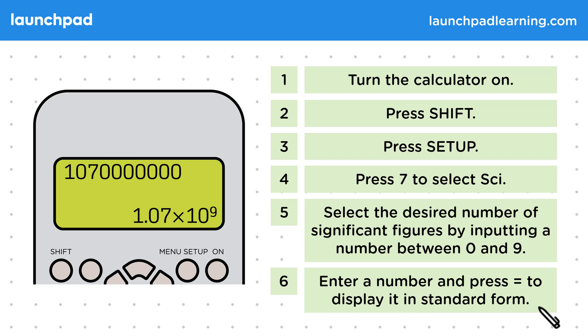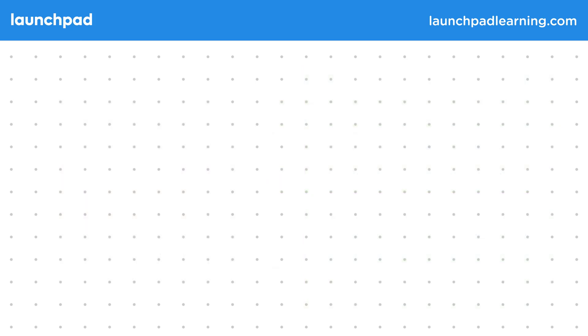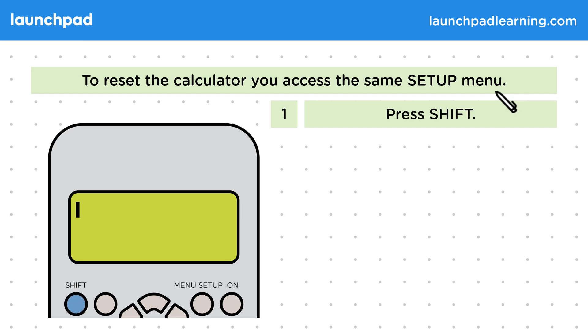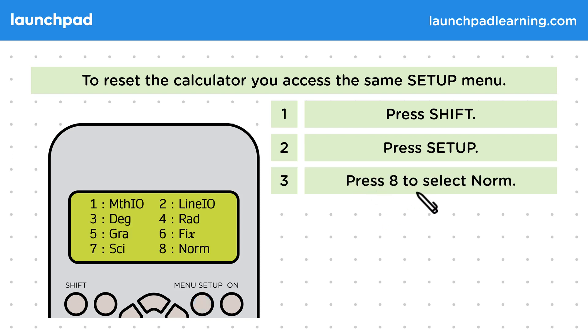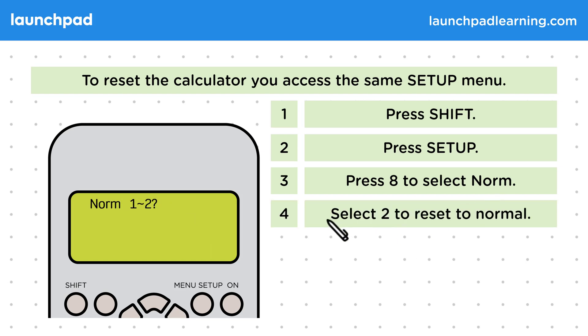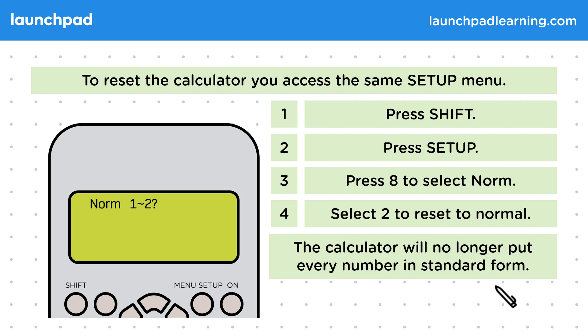So how do we reset the calculator so that it stops displaying everything in standard form? To reset the calculator, you access the same setup menu. So first press shift. Then press setup. This time you're going to press 8 to select norm. When your screen looks like this, select 2 to reset to normal. The calculator will no longer put every number in standard form.